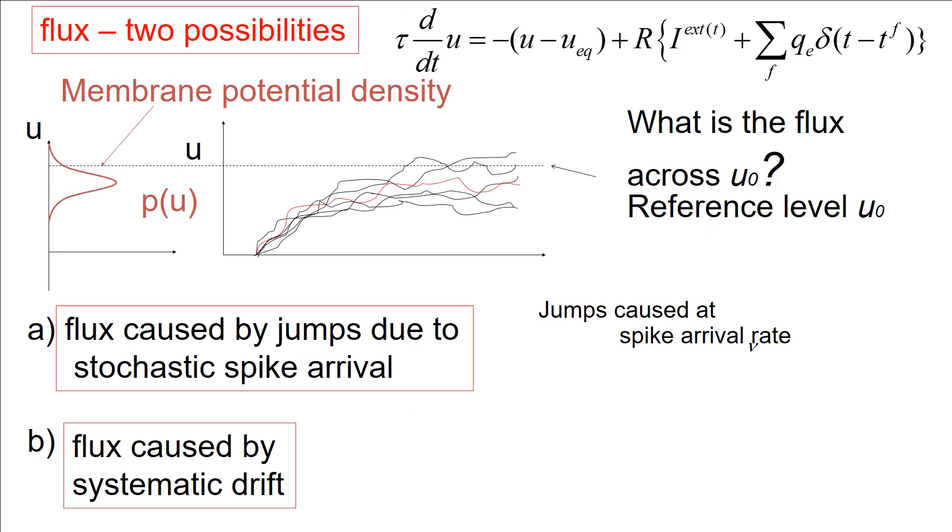In summary, I have two terms that contribute to the flux. Both terms are caused by a macroscopic view at the effects on many membrane potential trajectories, each described by a local differential equation. There is a continuous flux caused by the decay and the external input current. And then there is the jump flux caused by excitatory spike arrivals. And both contribute. The jumps caused by jumps is proportional to the spike arrival rate. And the flux caused by the systematic drift is caused by the density and by the slope of the membrane potential trajectory.